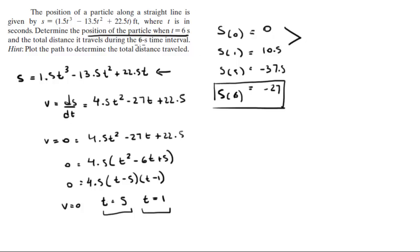We need to find the distance traveled during this time interval, so the total distance traveled. You got to find the differences each time the particle changed direction. 10.5 - 0 is 10.5.